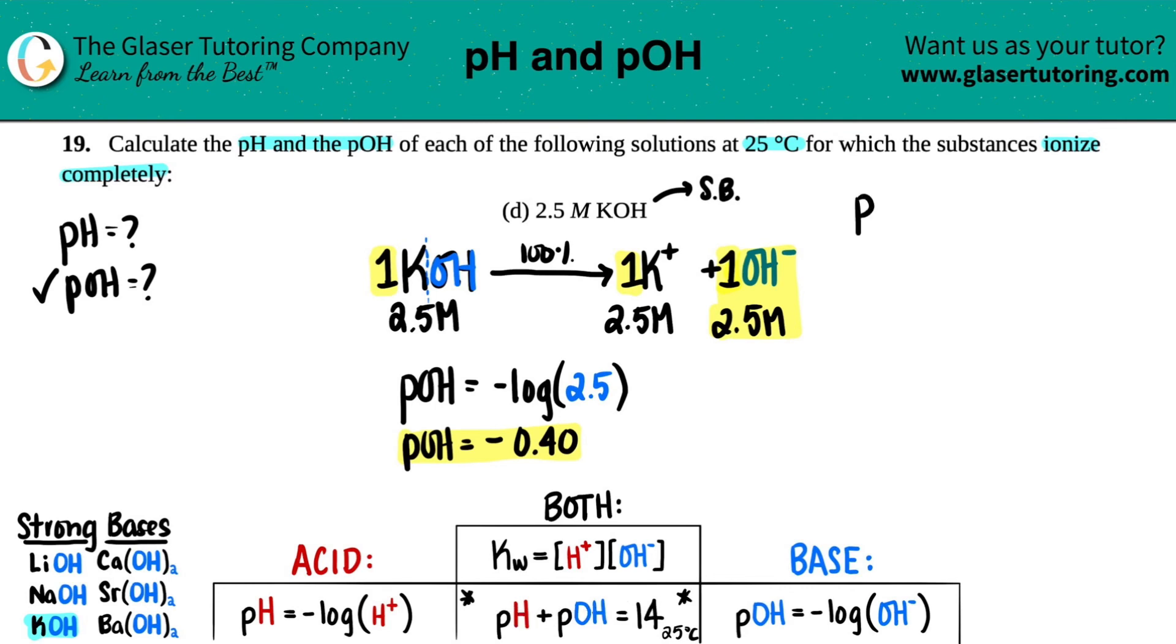So pH plus pOH equals 14. If we want to solve for pH, we could just rearrange this formula by just saying that the pH equals 14 minus the pOH, and then reds go with reds, and blues go with blues.